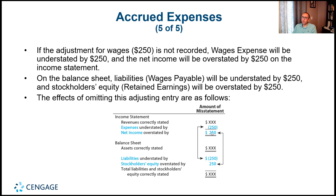The net income would be overstated — showing a value more than reality. Since net income is overstated, stockholders' equity would also be overstated. Because we did not record the liability on December 31st, liabilities would be understated. In summary: omitting this entry understates expenses, overstates net income, understates liabilities, and overstates stockholders' equity.